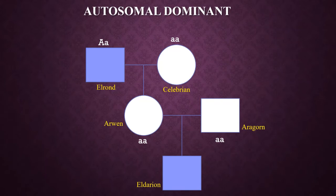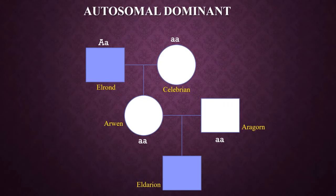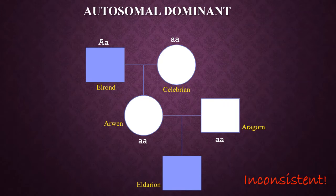In the autosomal dominant mode of inheritance, any individual with a dominant allele will have the trait. Elrond has the trait because he is heterozygous dominant, while Celebrían doesn't have it because she is homozygous recessive. Their daughter Arwen is homozygous recessive, and so is Aragorn. In order for Eldarion to have the trait, he needs to get at least one dominant allele from either or both of his parents. This mode of inheritance is inconsistent because neither of his parents have the trait nor are they carriers.